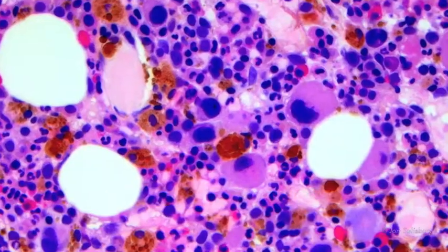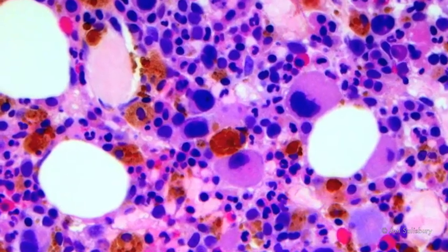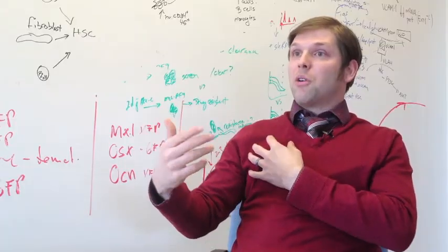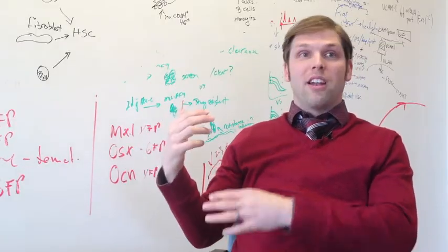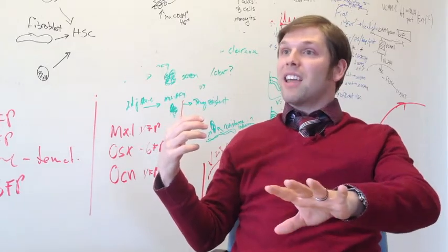This drug causes stem cells to leave the bone marrow, go into the blood, then they can put a line on you, they can collect the cells that they want, give you everything else back, and then you're on your way.